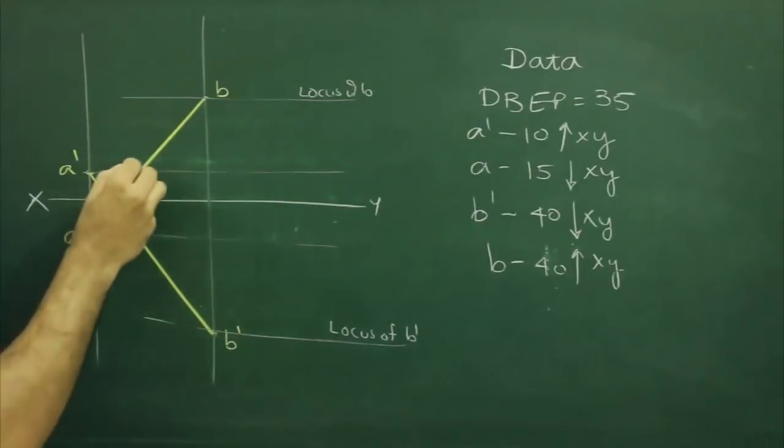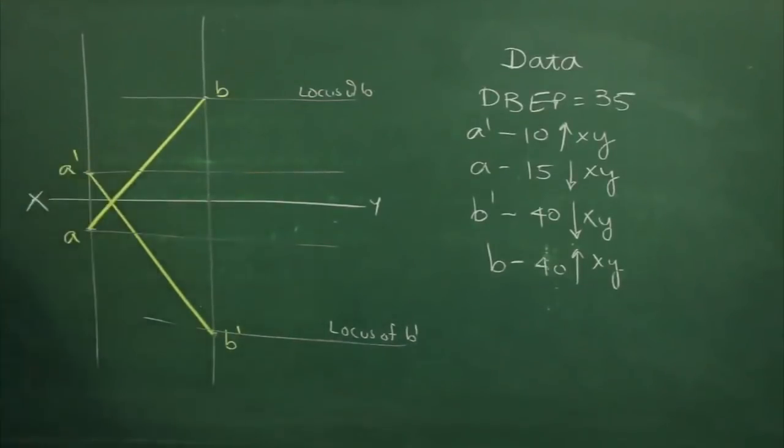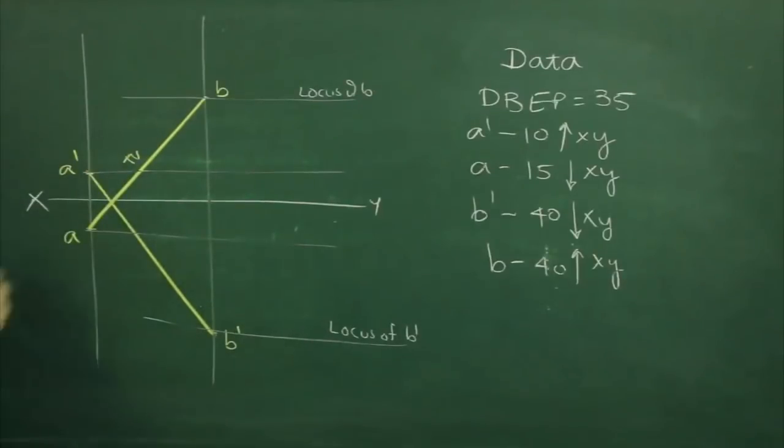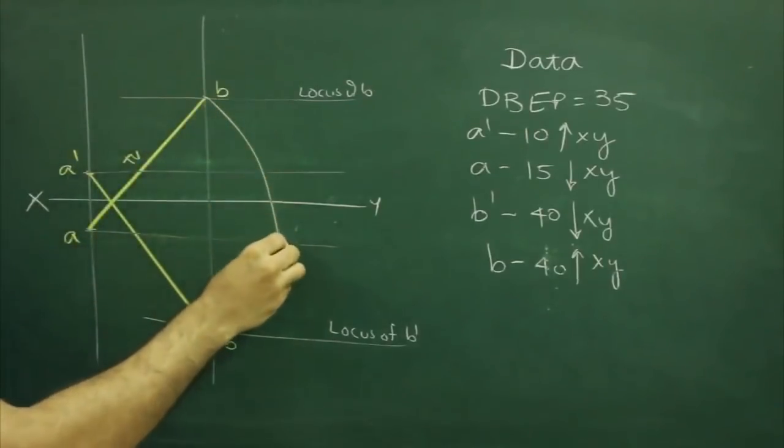We will follow the same method in that we will rotate top view, it becomes horizontal, parallel to XY line, that is B1, project down.